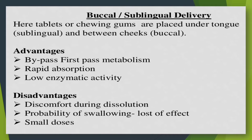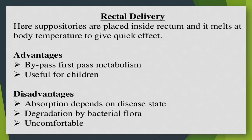For rectal delivery, suppositories are placed inside the rectum and melt at body temperature to give a quick effect. Suppositories are small round or cone-shaped objects inserted into the body — often into the bottom — where they melt or dissolve and release medication. Advantages: bypass first pass metabolism and useful for children. Disadvantages: absorption depends on disease state, degradation by bacterial flora, and it is uncomfortable.